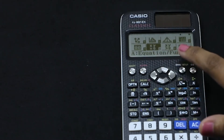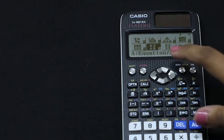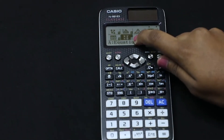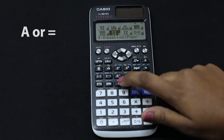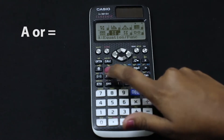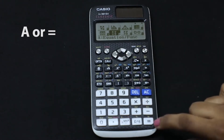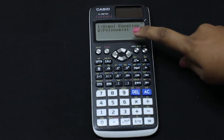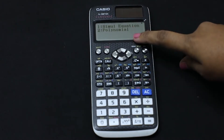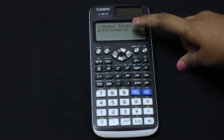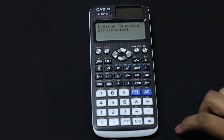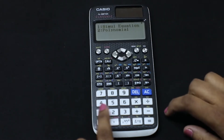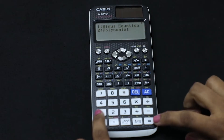Now let's learn how to solve an equation in this calculator. To select the equation option, it is denoted by A, so we can either press A or press equal to. Now it asks which kind of equation we want to solve — either simultaneous or polynomial. Let's select simultaneous by pressing 1.